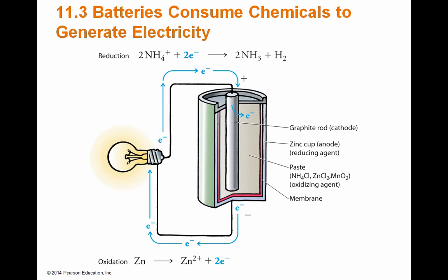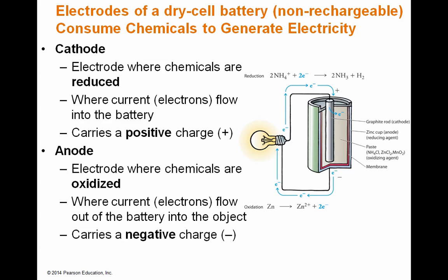Your cathode is the electrode where chemicals are reduced — an electrode is just where the chemistry is happening. The anode is where chemicals are oxidized. I always remember it as 'anode ox' — anode oxidation, just associate those two together. Your cathode is where current flows into the battery, whereas the anode is where current flows out into the object, and because of that the anode carries a negative charge. Electrons produced at the anode are negatively charged and naturally flow toward the positive cathode.